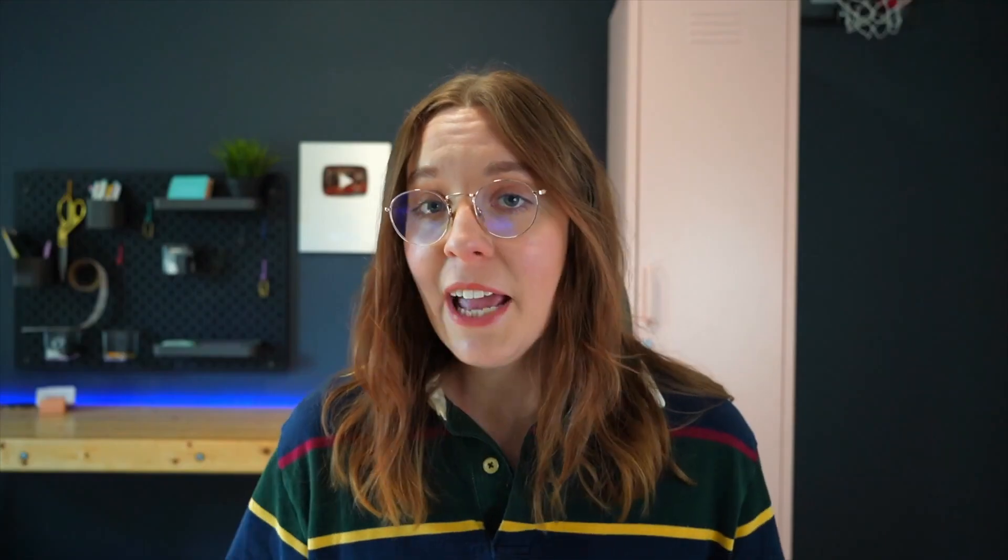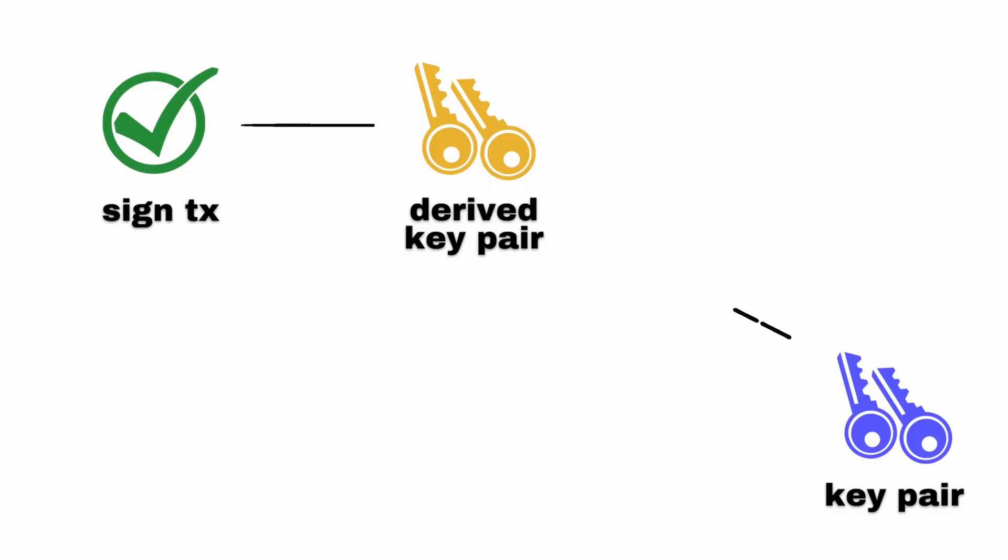Fortunately, we can get around these limitations thanks to DeSo's derived keys. A derived key is a crypto key pair that can sign transactions on behalf of another key pair, subject to some defined transaction and spending limits, allowing controllable access sharing of a user's account.